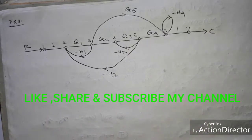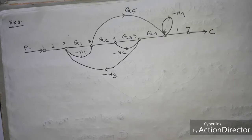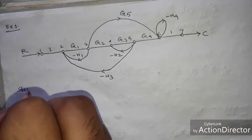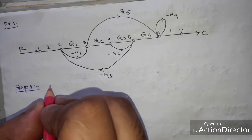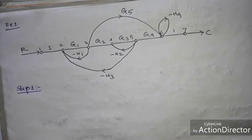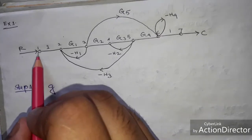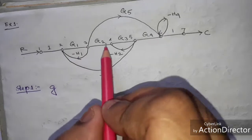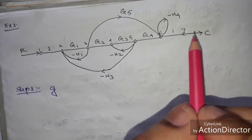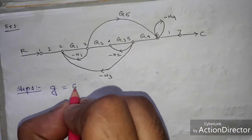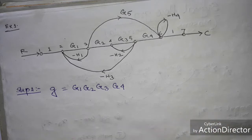Consider this signal flow graph. We want to find C/R, which is the transfer function. In step one, we find the gains of the forward paths. According to Mason's Gain Formula, we represent forward paths as G. From the graph, the first forward path is G1 × G2 × G3 × G4, since using this path we can reach the output.